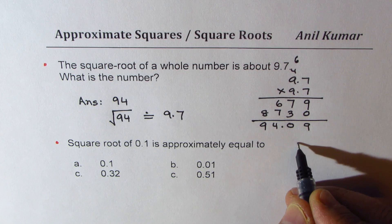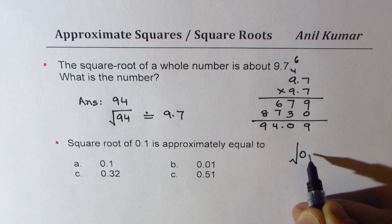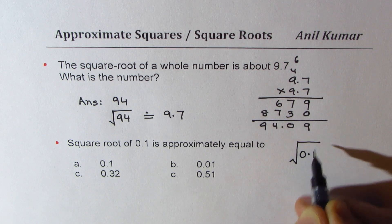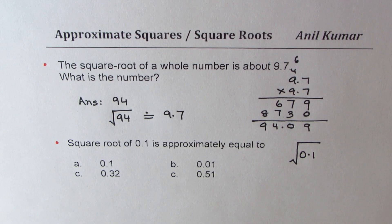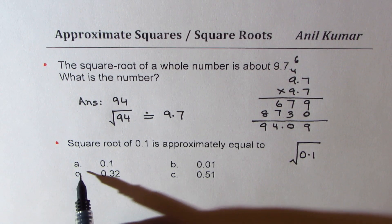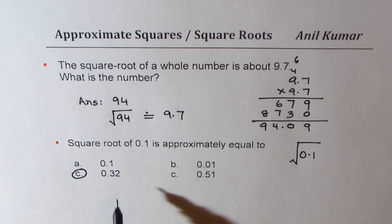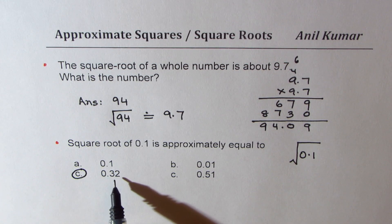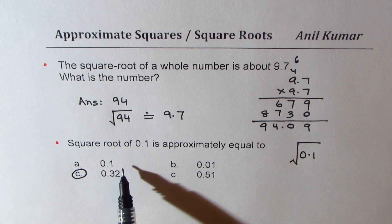What is square root of 0.1 equal to? That is the question for us. So the right answer here is 0.32. Now, 0.3 squared: 3 times 3 is 9, correct?